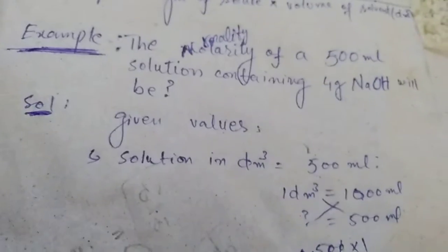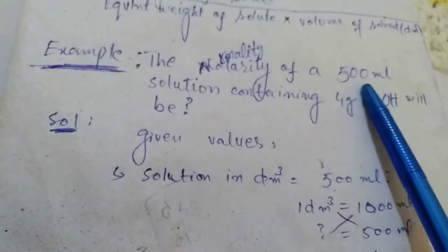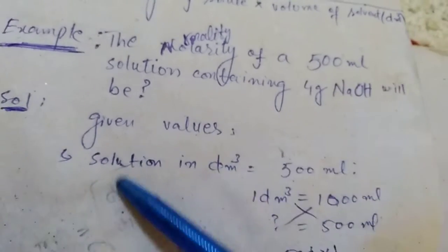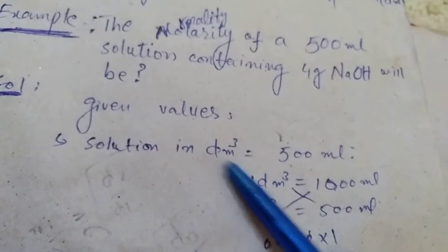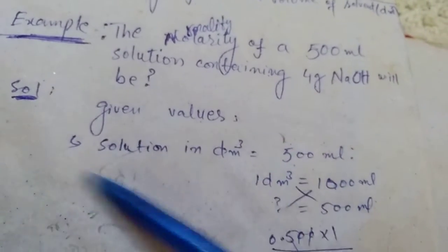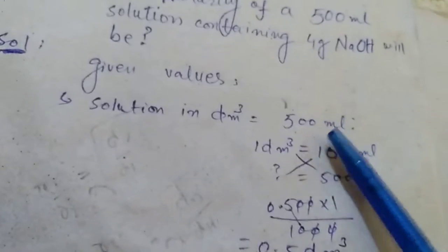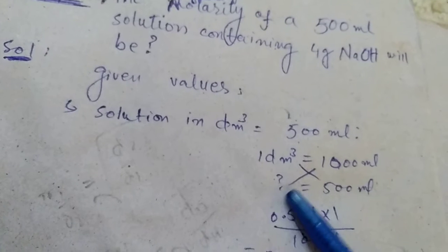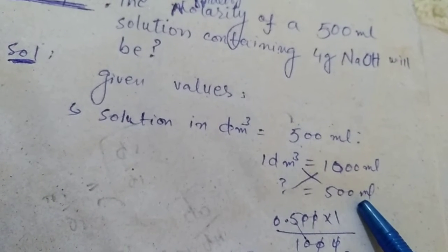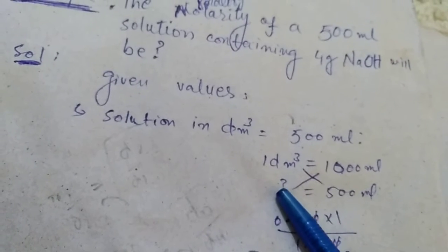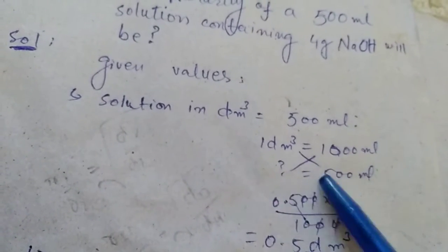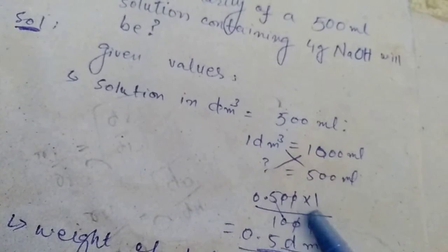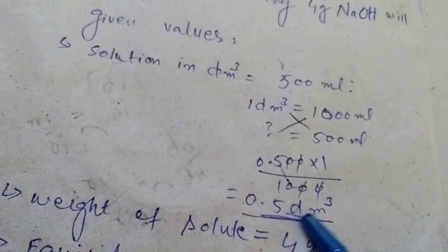First of all, we collect the values from the question. The volume of solution is not given in dm³, so we will convert it. The volume is 500 mL. Since 1 dm³ = 1000 mL, we cross-multiply: 500 mL × (1 dm³ / 1000 mL) = 0.500 dm³, which means half dm³.